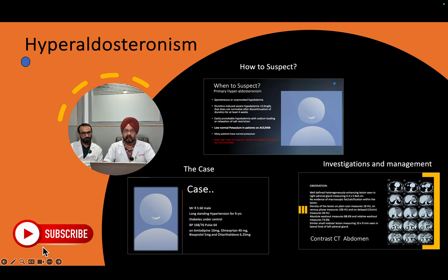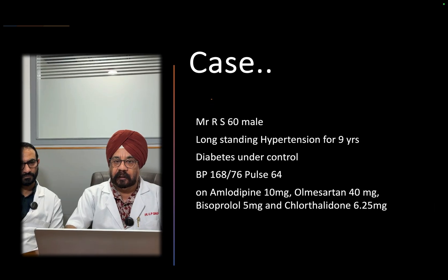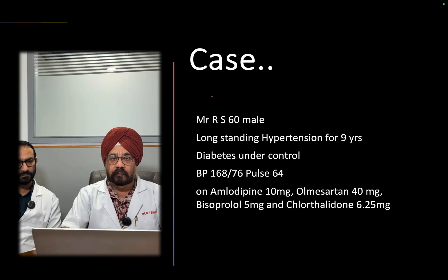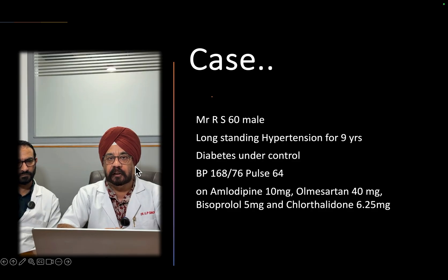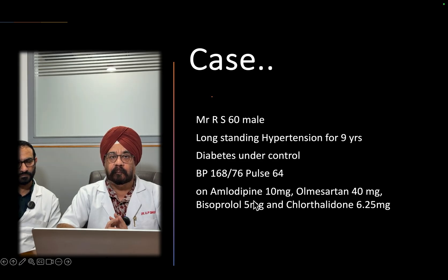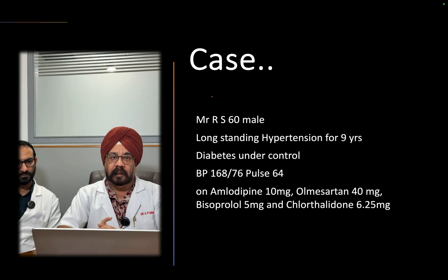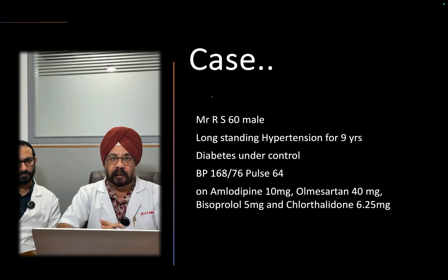First, the case. This patient was a 60-year-old male with long-standing hypertension and diabetes who presented with uncontrolled blood pressure. He was on amlodipine, olmesartan, bisoprolol, and chlorthalidone — four drugs including one diuretic — and his BP was still not controlled. This is resistant hypertension.